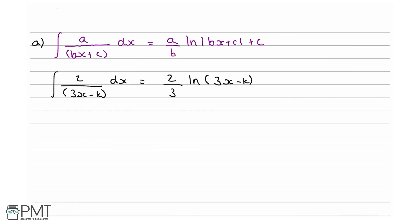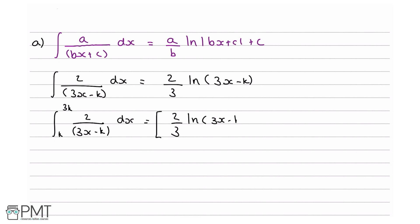This implies that the integral from k to 3k of our expression 2 over 3x minus k with respect to x can be written as 2 over 3 ln(3x minus k), evaluated between 3k and k. This is the correct notation for how you want to present your answer.